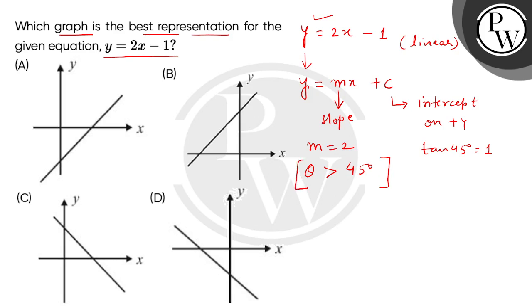Now the second conclusion is that the value of the intercept on the y-axis is minus 1. It means which axis is being intercepted? The negative y-axis.